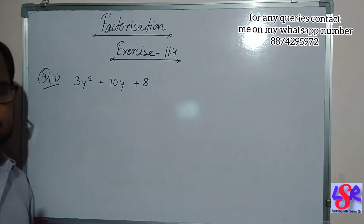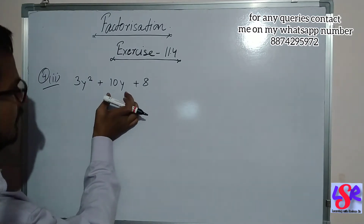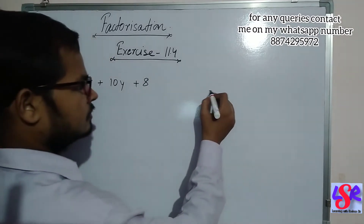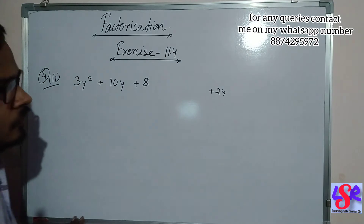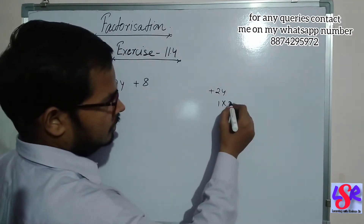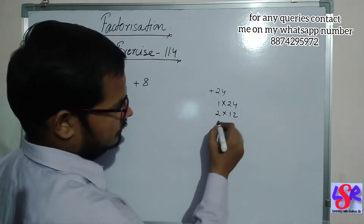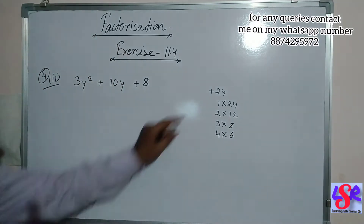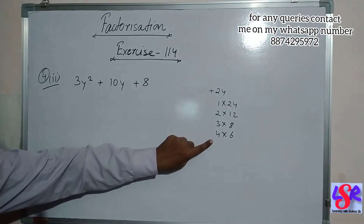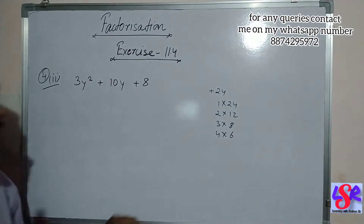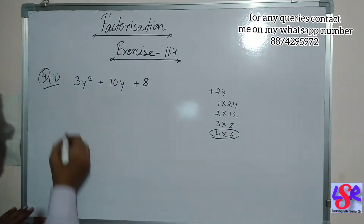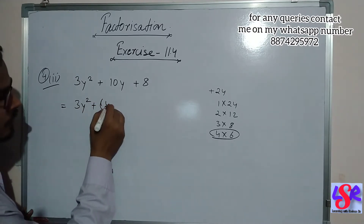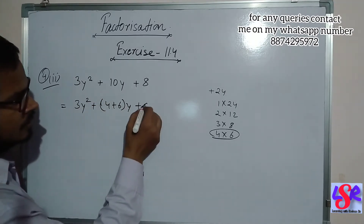Now let's see question number four, second part. Here we are having 3y square plus 10y plus 8. Now 3 into 8 gives plus 24. The factors of 24 are 1 into 24, 2 into 12, 3 into 8, 4 into 6. As we are having a plus sign, we are going to add any two factors to get 10, so we take 4 and 6.